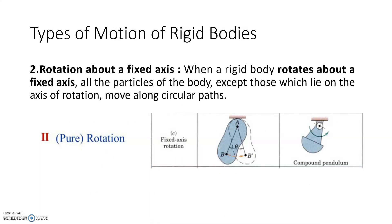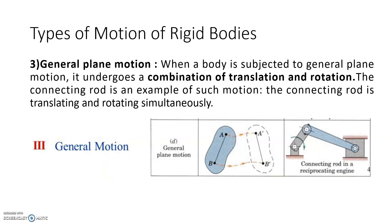The second type of motion is rotation about a fixed axis. When a rigid body rotates about a fixed axis, all particles except those on the axis of rotation move along circular paths. Point B rotates about A from initial position B to final position B'. An example is the compound pendulum. The third category is general plane motion, which occurs when there is a combination of translation and rotation — an example is the connecting rod in a reciprocating engine.